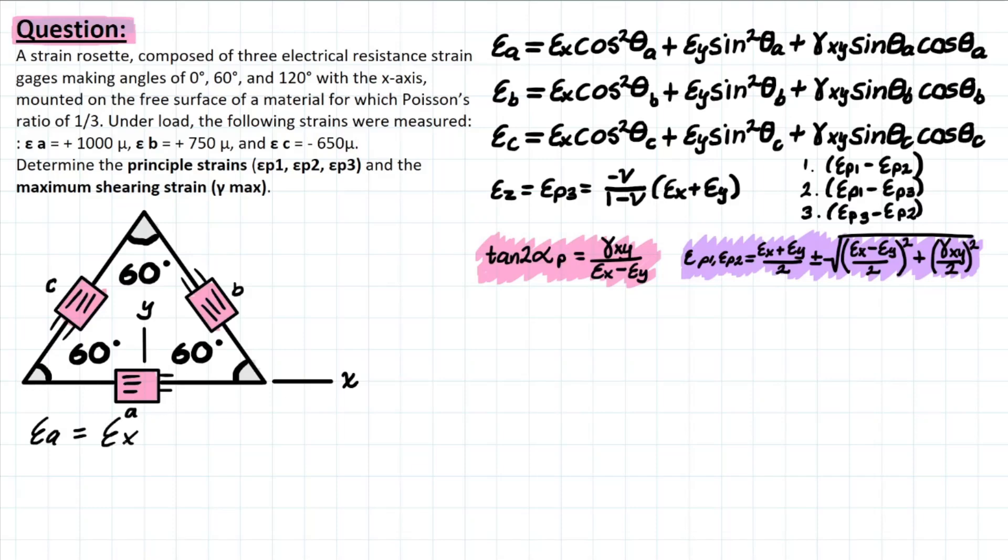But since it's aligned with the x-axis, we can also determine that the strain of x will be equivalent to the strain of a. And that value is going to be 1,000 micro, and then whatever the units that follow.